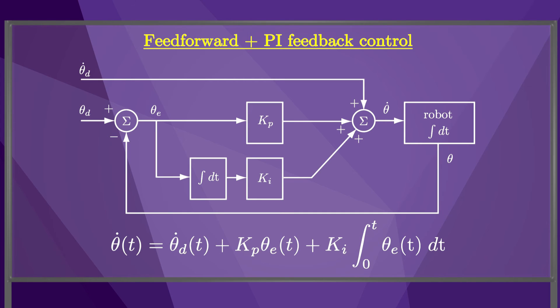We can augment this control law by adding a feedforward term. If the error is zero, the commanded velocity is just the desired velocity. This is our final, preferred control law if the commanded controls are velocities.